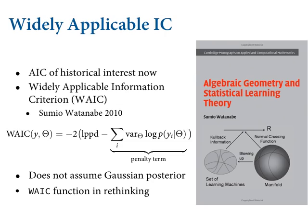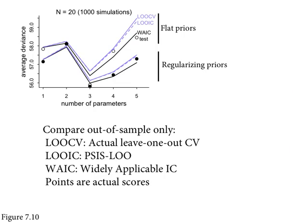There's a function in the rethinking package to calculate WAIC, and a box in the chapter walks you step-by-step through the calculation. You just need one posterior distribution. Let me show you in simulation how these things do at predicting out-of-sample accuracy. We go back to the same simulation tournament and compute these criteria, scoring them on their error relative to the known generalization error.